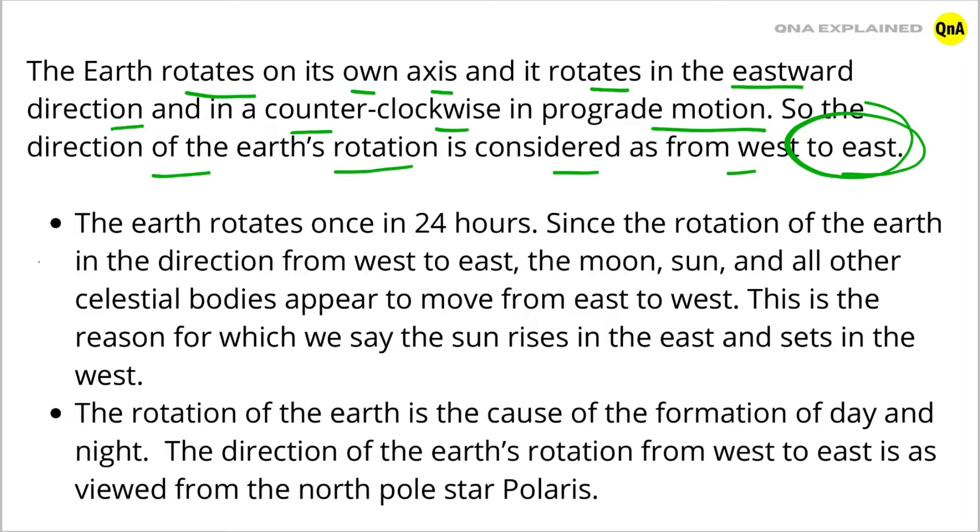The Earth rotates once in 24 hours. Since the rotation of the Earth in the direction from west to east, the moon, sun, and all other celestial bodies appear to move from east to west.